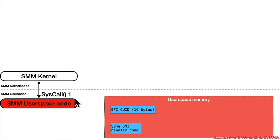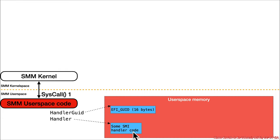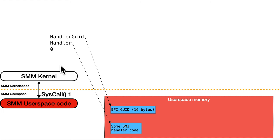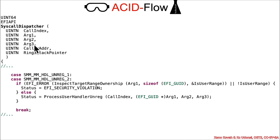We've got user space code and that first system call. It has handler_guid, which is a pointer to an EFI GUID — a 16-byte data structure, globally unique identifier. It's got handler, which is a pointer to some sort of SMI handler code, basically saying please invoke this code on some particular condition. The third parameter was 0. Those parameters are going to be passed through the system call up to kernel space. Inside the system call dispatcher, which has cases for all the different system calls, we can see that both unreg1 and unreg2 fall through to the same code.